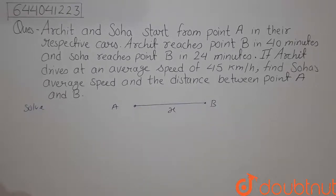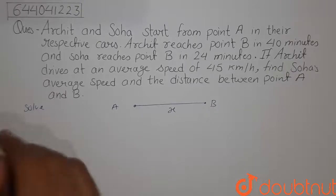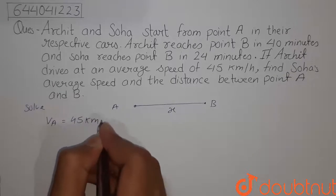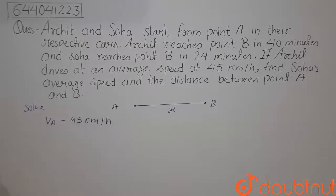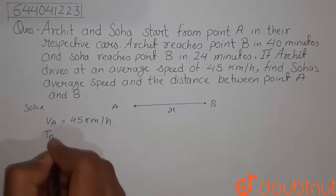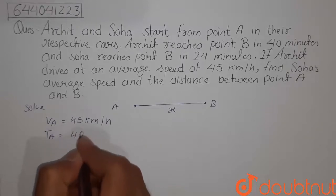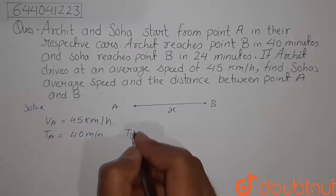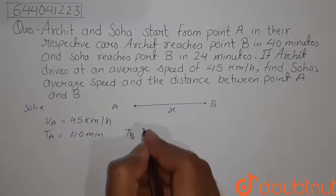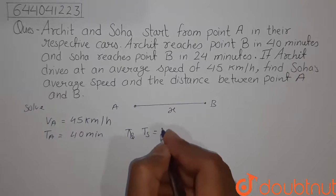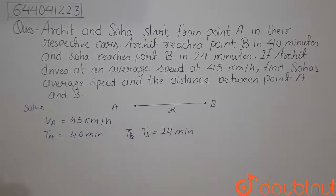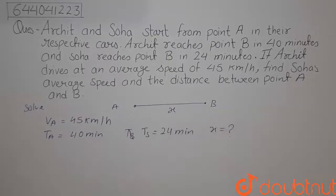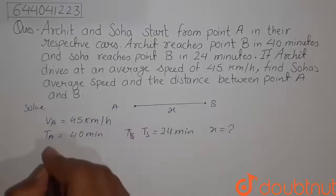It is given in the question that the average speed of Archit is 45 km per hour, and the time taken by Archit, TA, is 40 minutes. The time taken by Soha, TS, equals 24 minutes. We have to find this distance X and the average speed of Soha, VS.